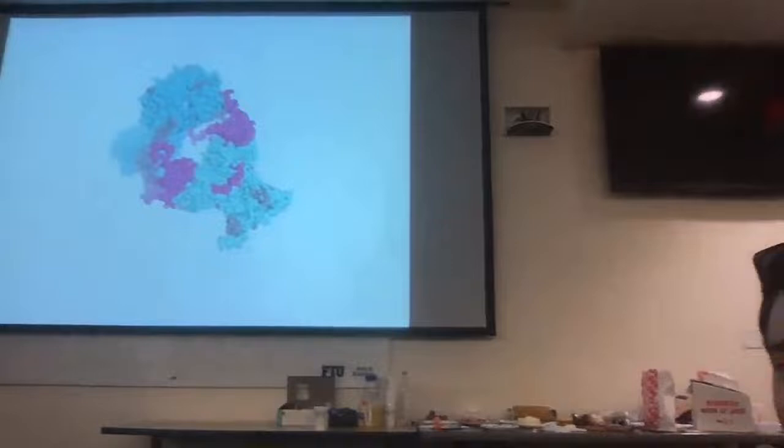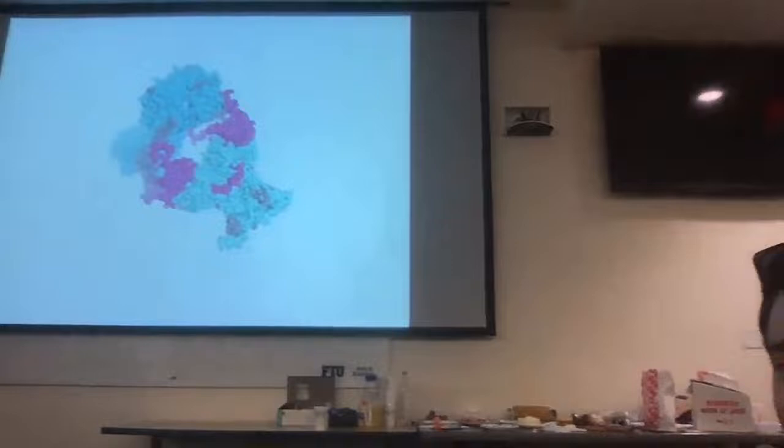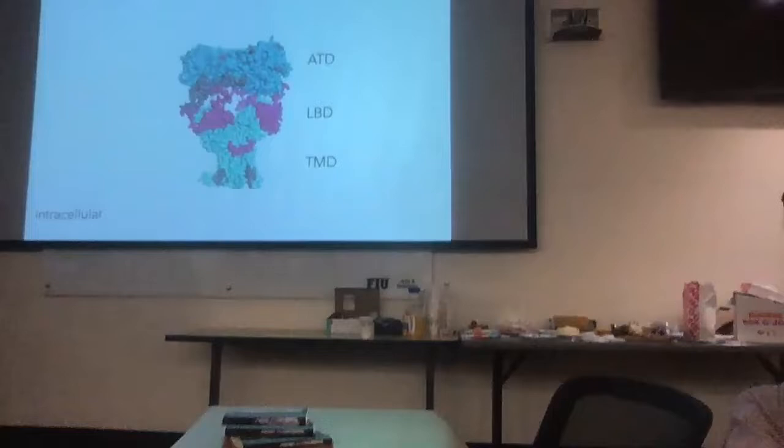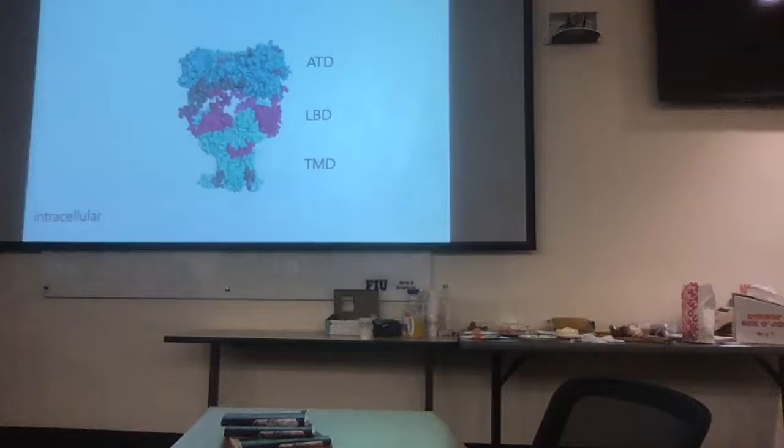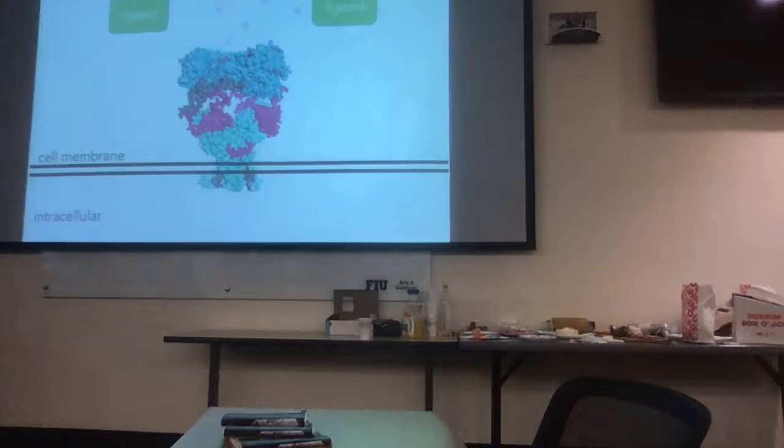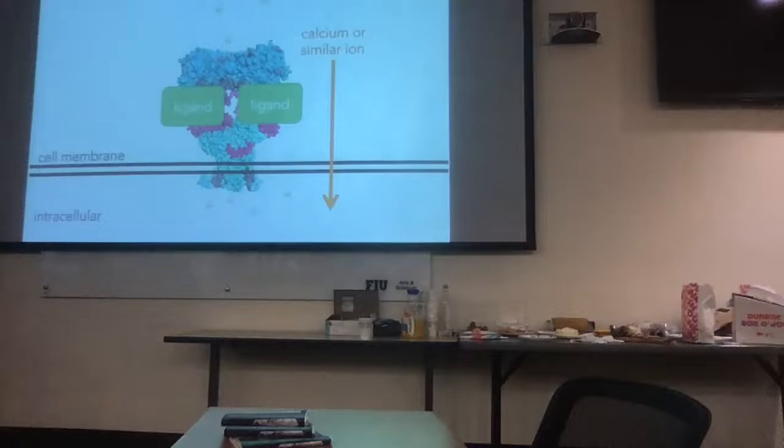These guys all line up together and have three main conserved domains. We have an amino-terminal domain, a ligand-binding domain, and a transmembrane domain. The transmembrane domain sits within the membrane of the cell. When ligands come and bind to the ligand-binding domain, there's a conformational change. This change allows the transmembrane domain, which has an ion channel, to open and allows calcium ions to flow through from the external to the intracellular part of the cell.